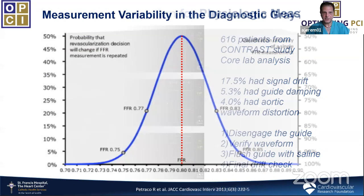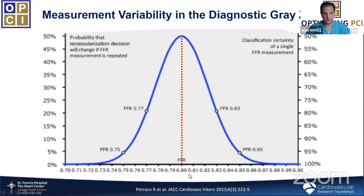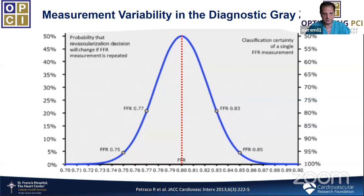Another issue: any test with a threshold has inherent variability. Looking at two separate FFR measurements within five minutes, the closer we are to the 0.8 cutoff, the higher the likelihood of falling on the other side if the test is repeated — almost 50% probability. In the zone between 0.77 and 0.83, there is about a 23% chance of switching categories if the test is repeated.